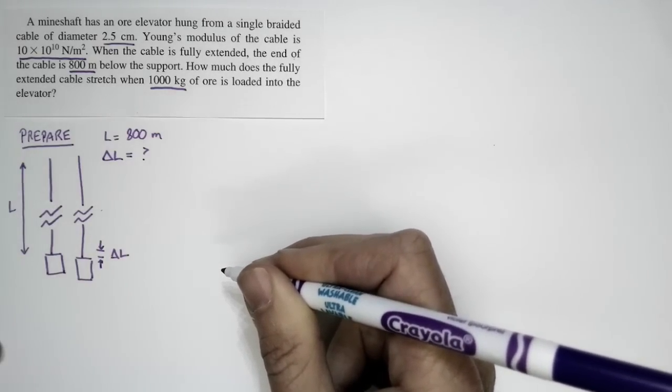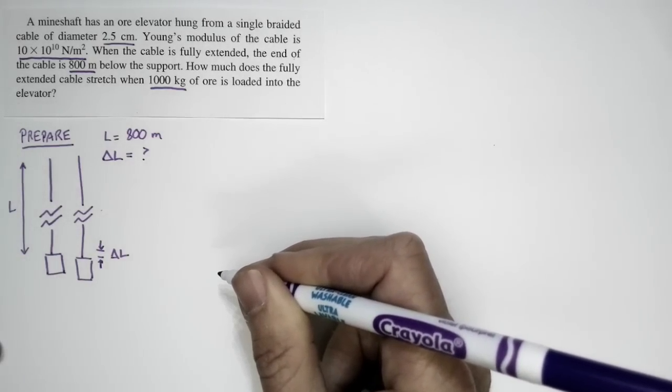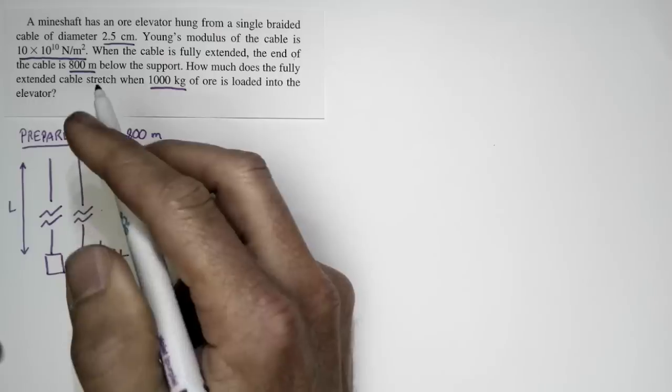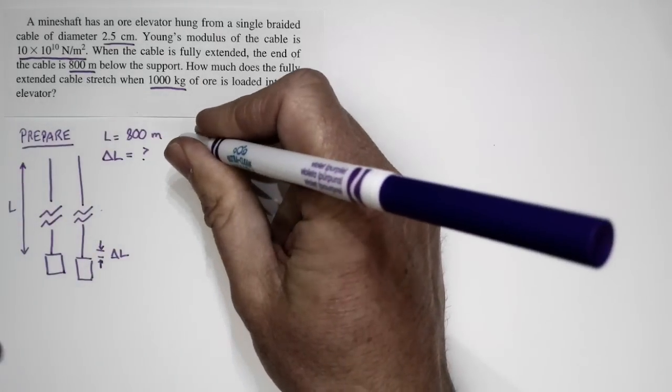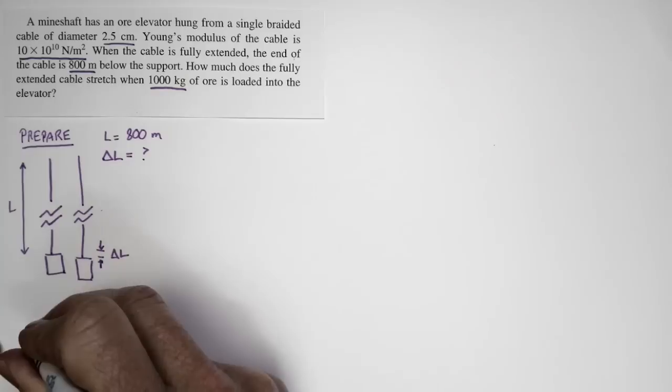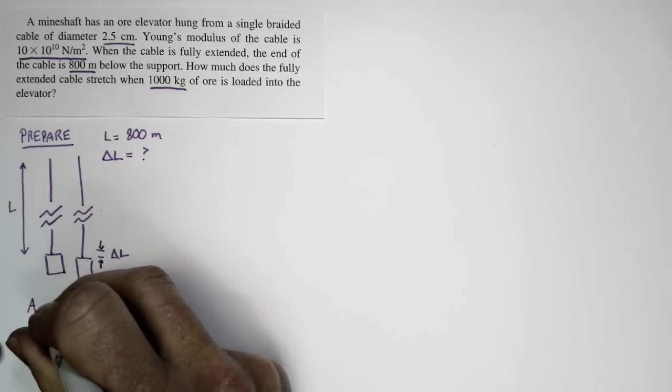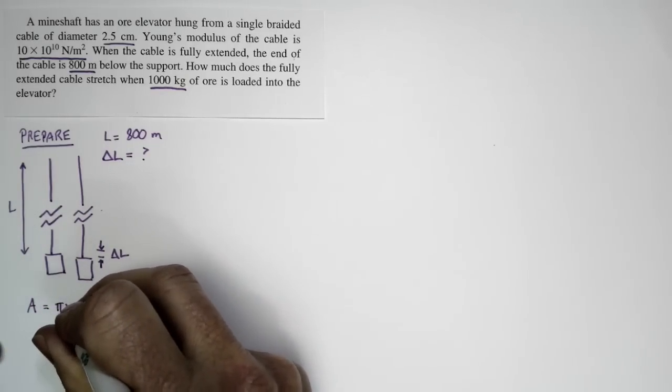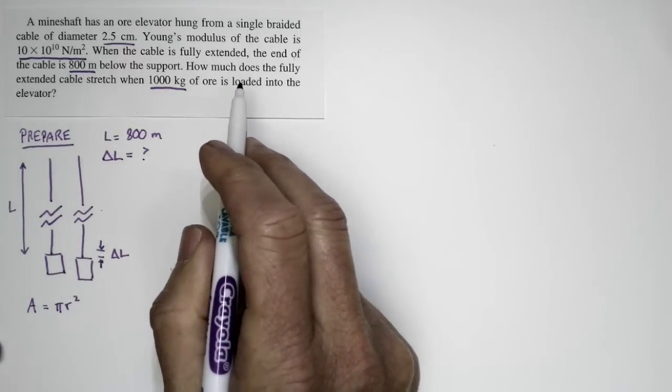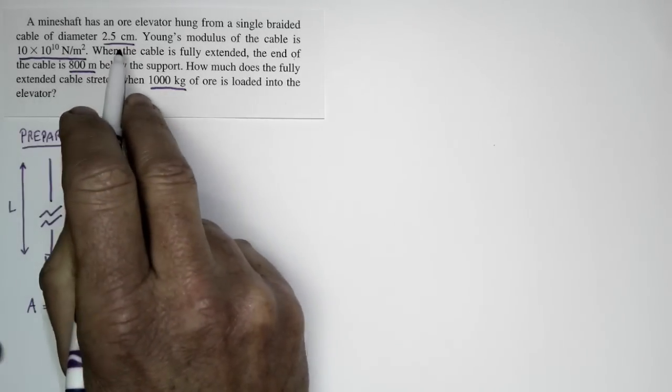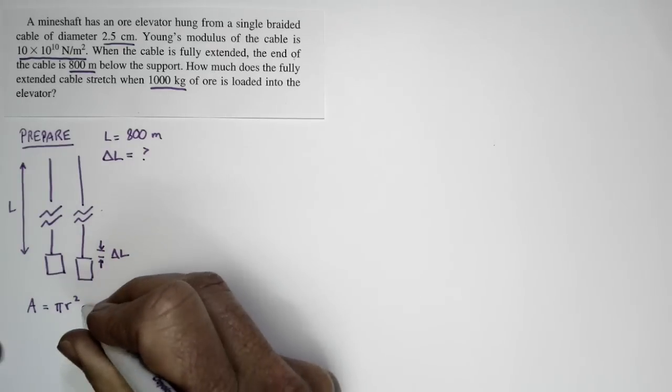This is a basic problem having to do with elasticity, and we need to know some properties of the cable. One property is the Young's modulus that's given. Another property we need to know is the cable's area, which is just pi r squared. We're going to assume it's a circular cable, and we're given the diameter, so that makes sense.